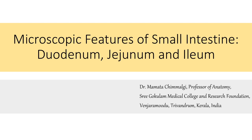Duodenum is the proximal part of the small intestine. It is 25 cm long and extends from the pylorus of the stomach to the duodeno-jejunal junction. Jejunum is about 2.5 meters long and forms the proximal two-fifths of the small intestinal coils. Ileum is the longest part, about 3.5 meters long, forms the terminal three-fifths of the intestinal coil, and ends at the ileocecal valve.